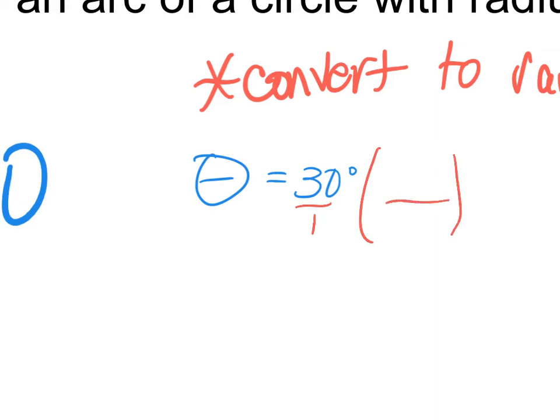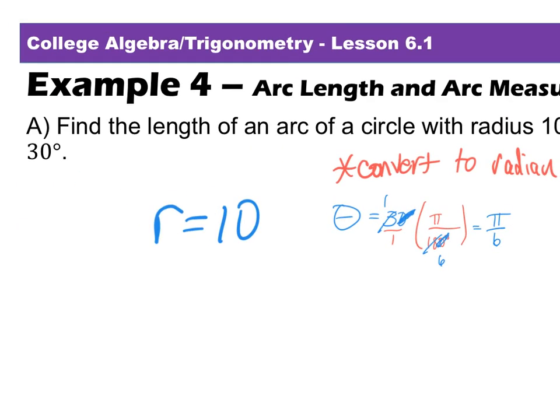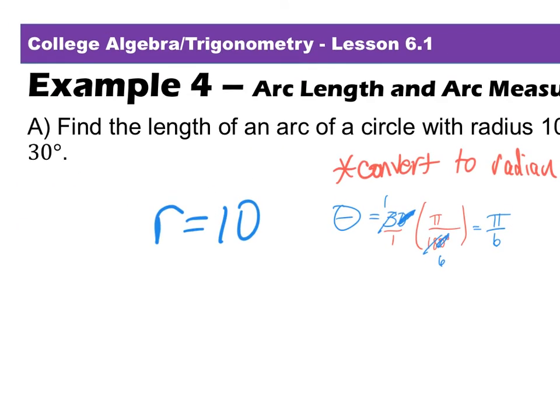This is 30 over 1. So I have either 180 over pi or pi over 180. I'm going to put 180 on the bottom because if degrees are on the bottom and degrees are on the top, that means the degrees will cancel out. So now I say, okay, 0 and 0 divide by 10. And then I say 3 goes into 3 once. 3 goes into 18 six times. So my central angle in radians is pi over 6.